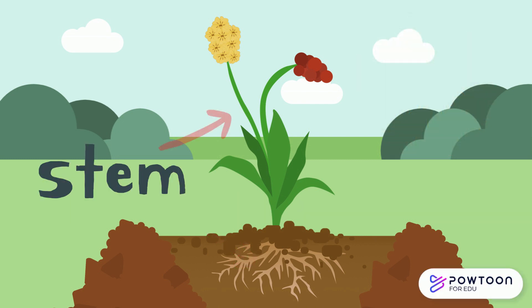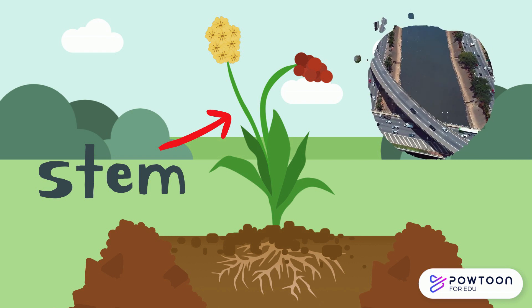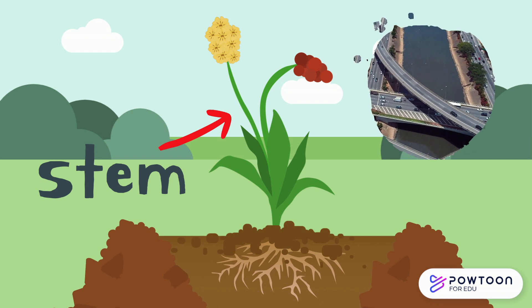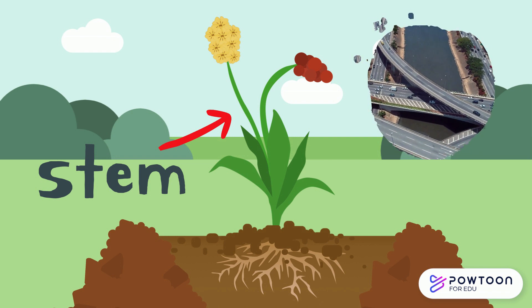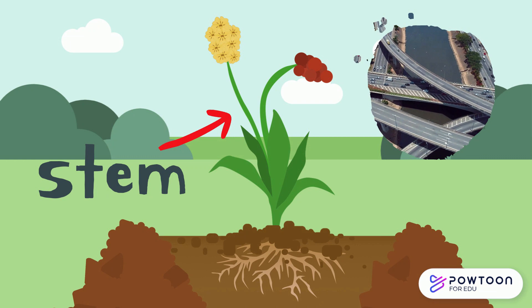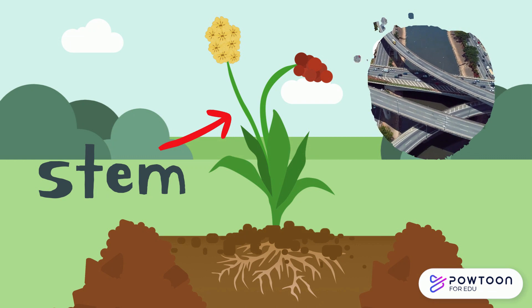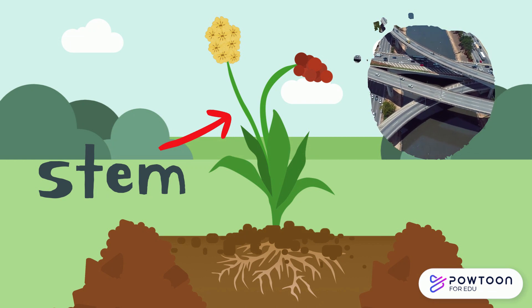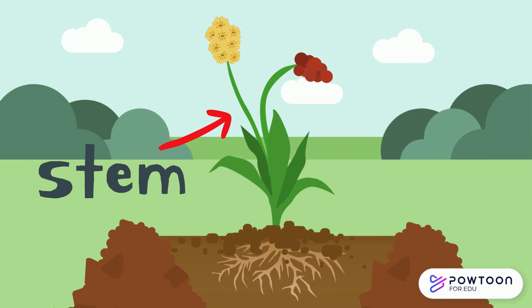Next, we have the stem. The stem is like a highway that transports water and nutrients from the roots and leaves to the rest of the plant. It also helps the plant stand up straight and provides support.